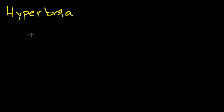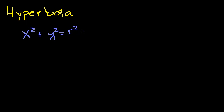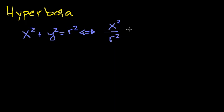Just as a review — and I want to do this so you see the similarity in the formulas, the standard form of the different conic sections — if you have a circle centered at 0, its equation is x squared plus y squared is equal to r squared. This could also be written as x squared over r squared plus y squared over r squared is equal to 1. So this is a circle.